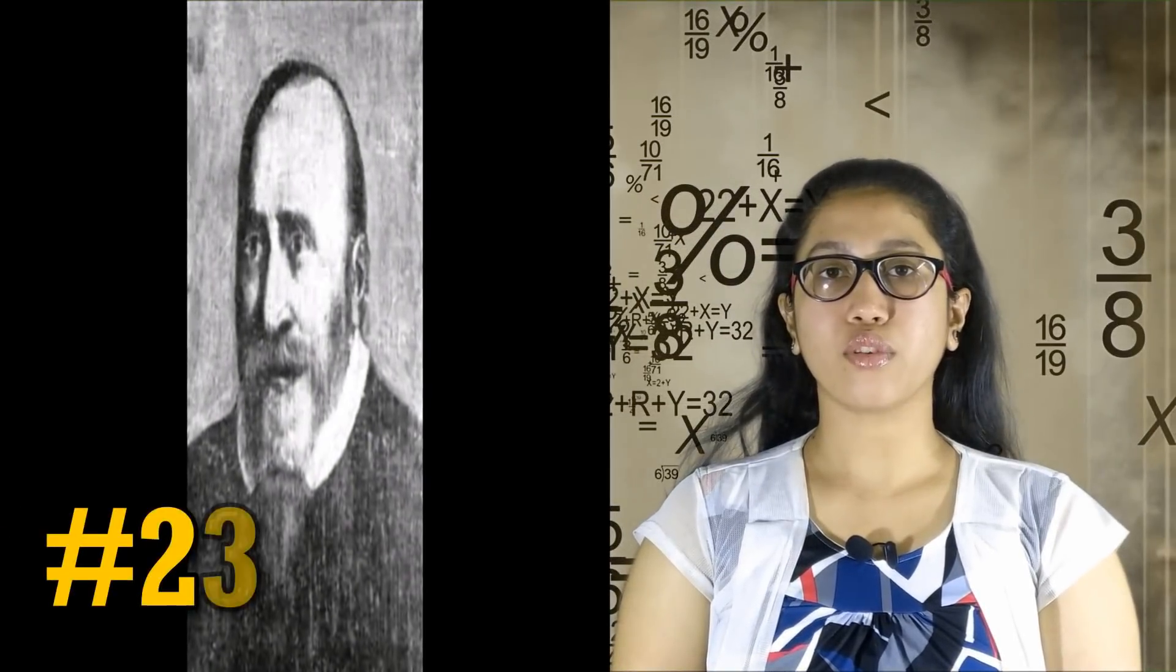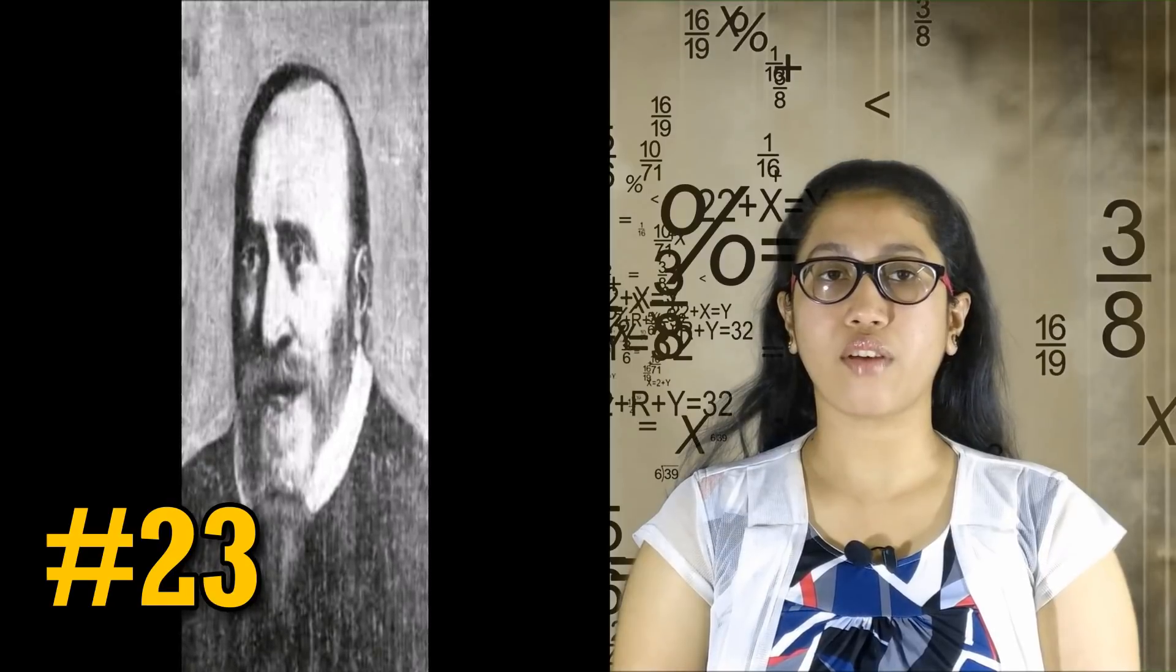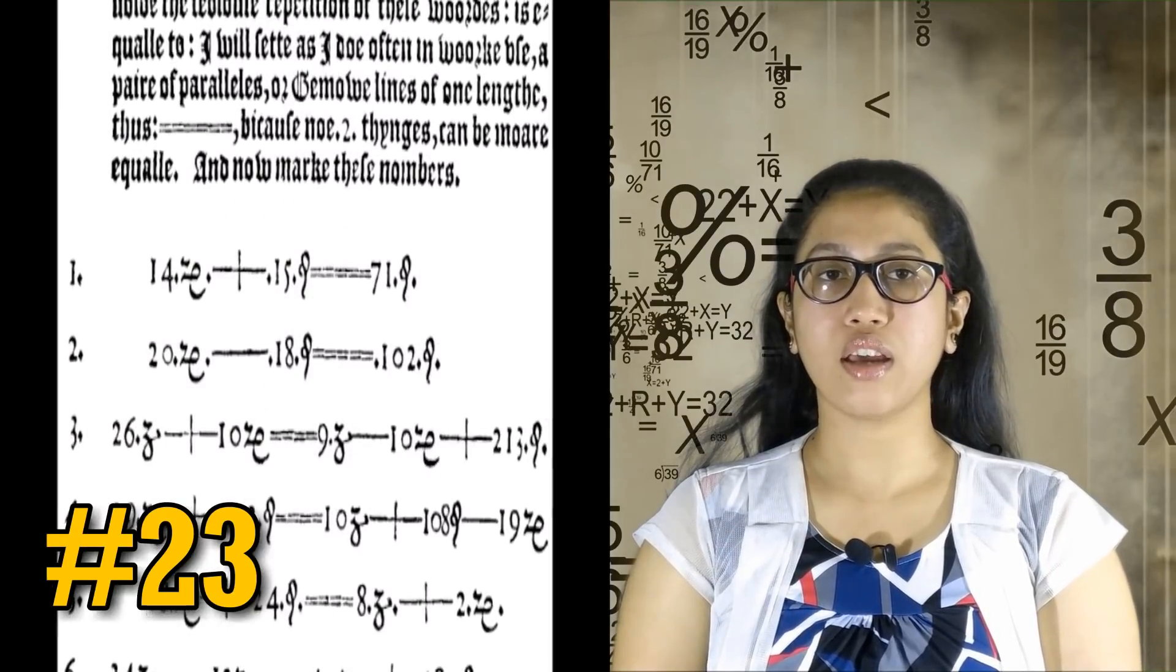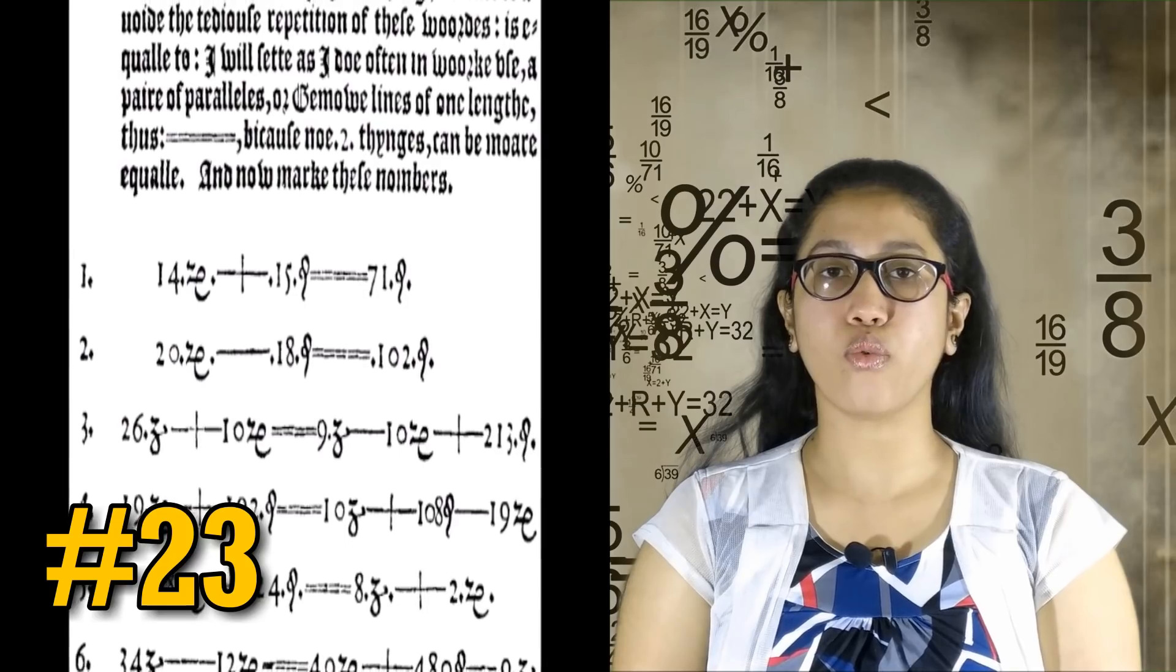The equal sign was invented in 1557 after Welsh mathematician Robert Recorde got tired of having to write 'is equal to' over and over again.